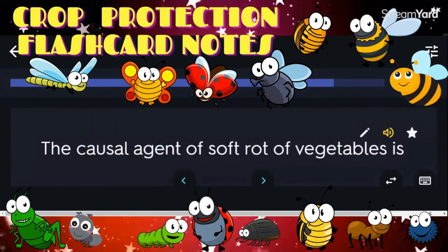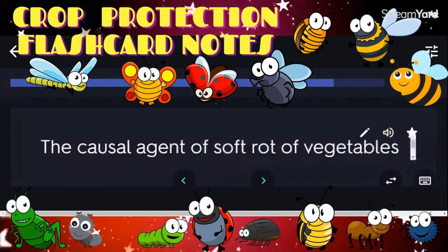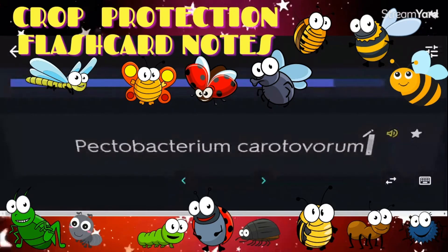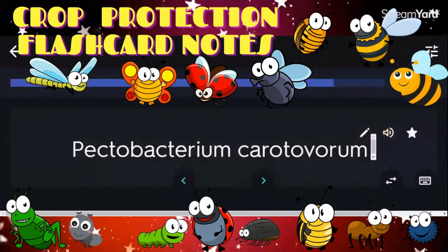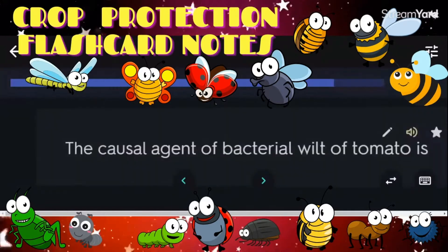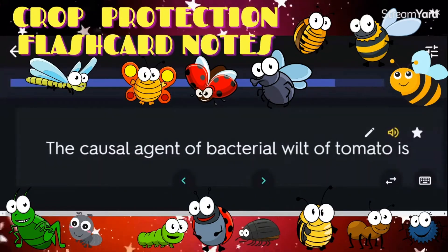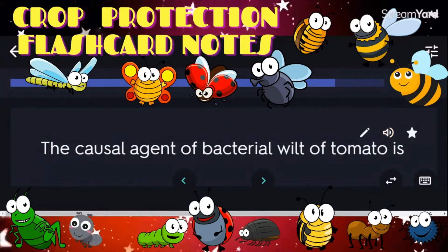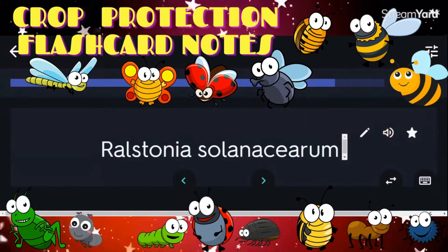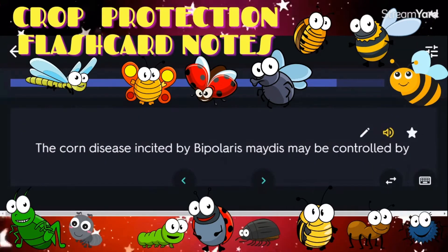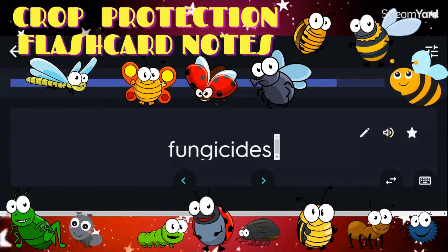The causal agent of soft rot of vegetables is Pectobacterium carotovorum. The causal agent of bacterial wilt of tomato is Ralstonia solanacearum. The corn disease incited by Bipolaris maydis may be controlled by fungicides.